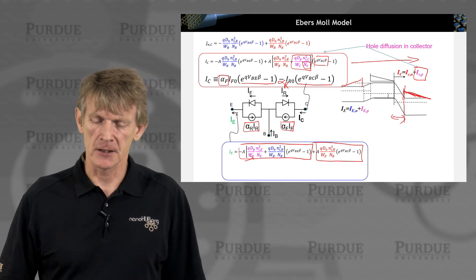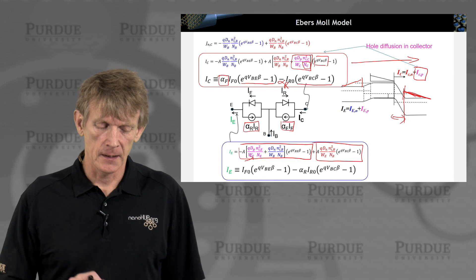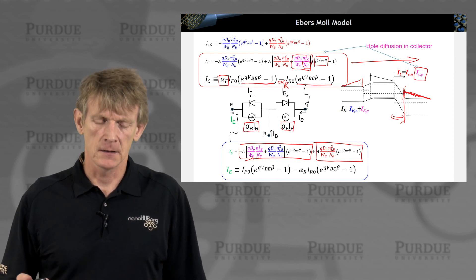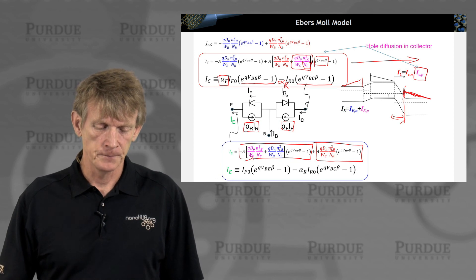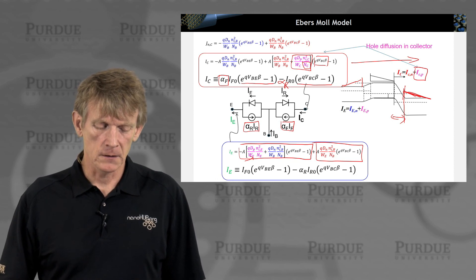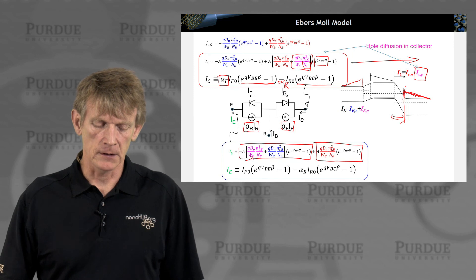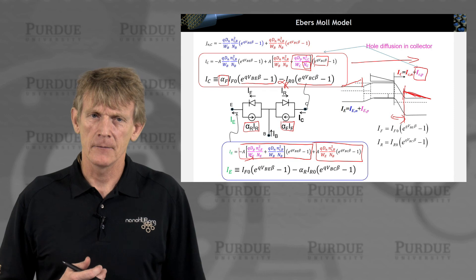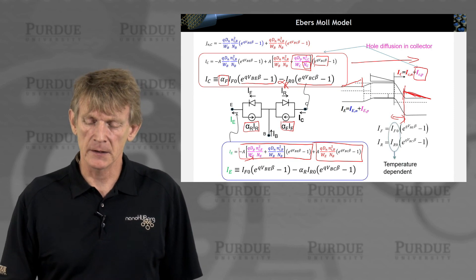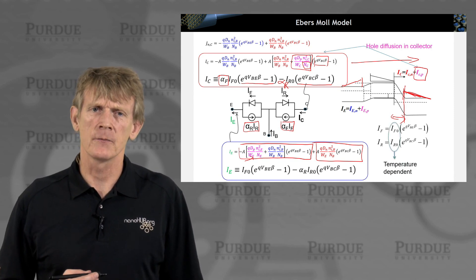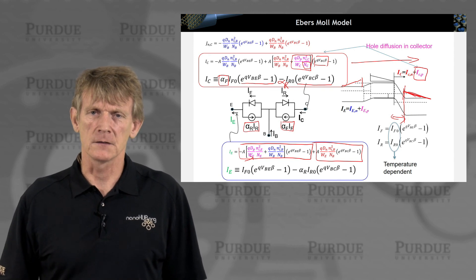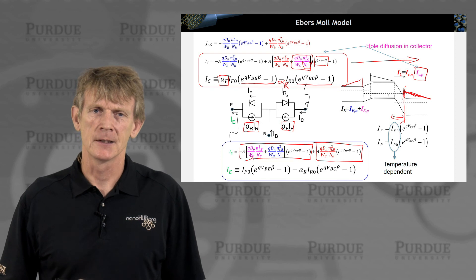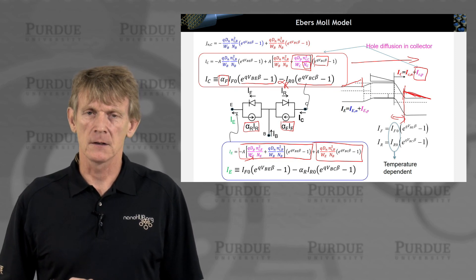And we define in a similar fashion an expression with forward and reverse current flow in this model. What's interesting is that you can define these coefficients, but they're temperature dependent. So they're not constants. If you build a computer program, a circuit program, you need to capture these parameters quite carefully.